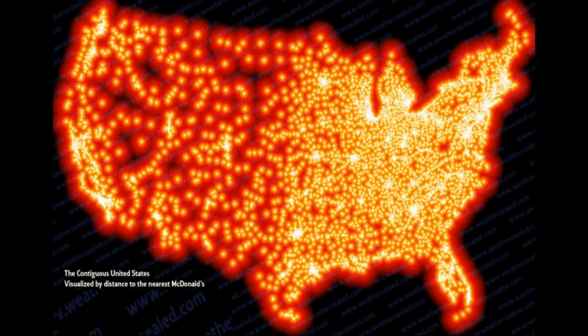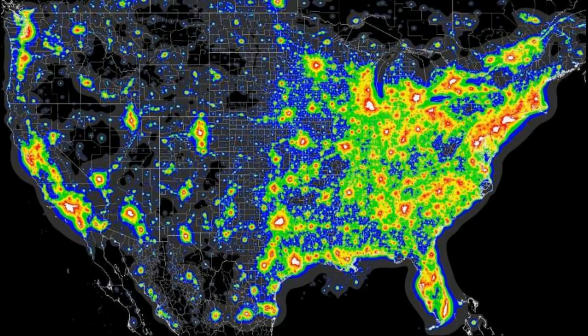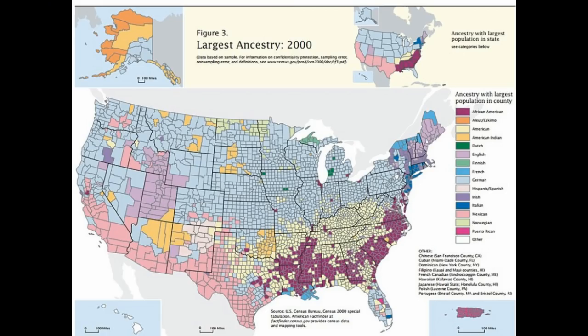This one is a heat map visualized by the distance to the nearest McDonald's. This is a heat map of nightlights in the United States. This map here is ancestry by county — what the majority of people represent with. So you can see just by number of counties and size, the dominant ancestry is German.